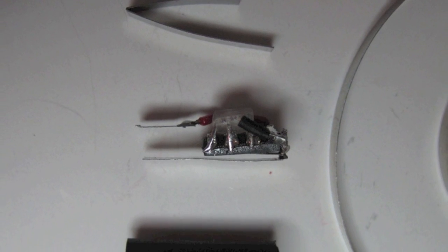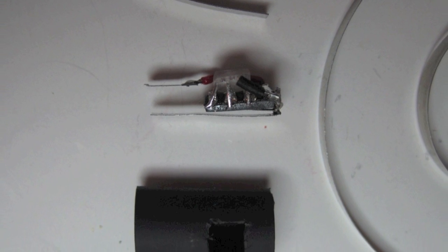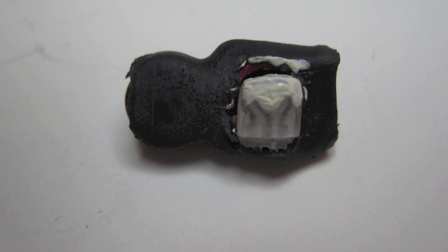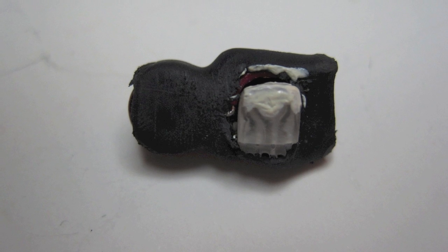Finally, I added two contacts for the battery and wrapped everything with heat shrink. The white paint you see on the picture reflects LED light, making it more even.